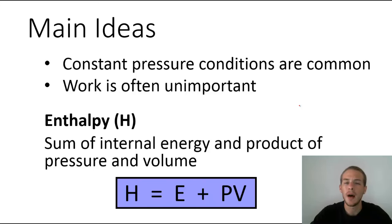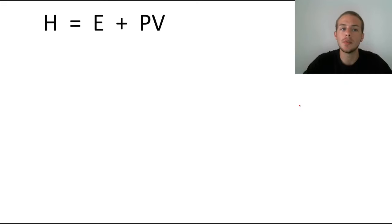So you might be asking yourself, how does this equate to the heat that's given off at constant pressure? Let's examine this equation a little bit more closely and see if we can simplify it down to a way that's more easy to measure. Again, we have H equals E plus PV.